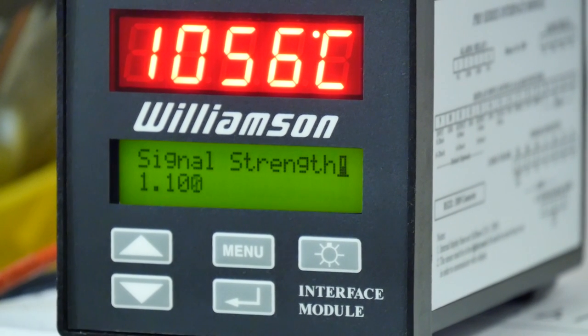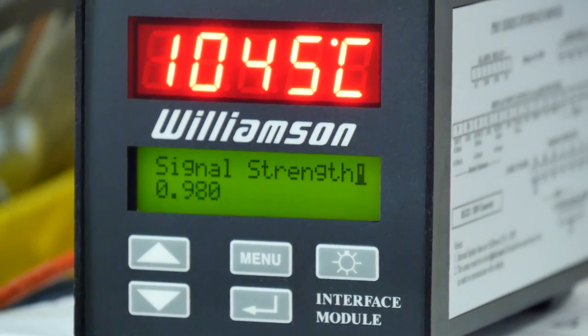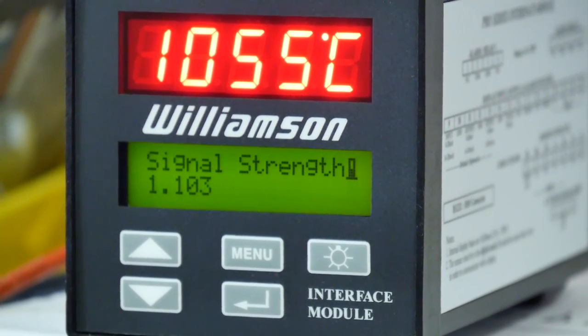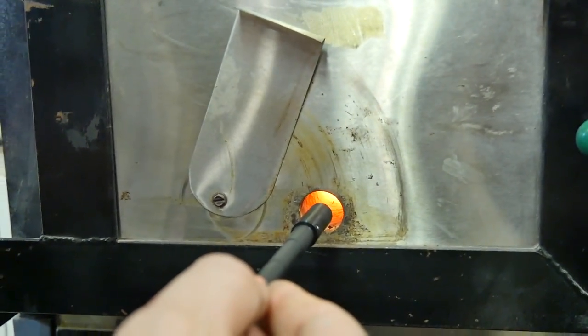So the signal strength on the Williamson goes from zero to two. The signal strength is just the total amount of infrared energy being collected by it. We're looking in this port at the moment.